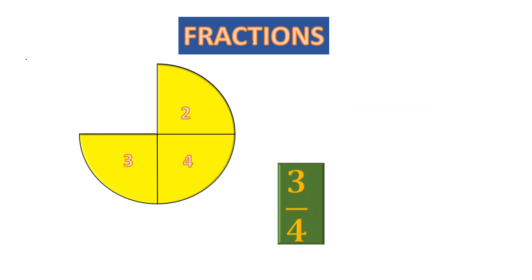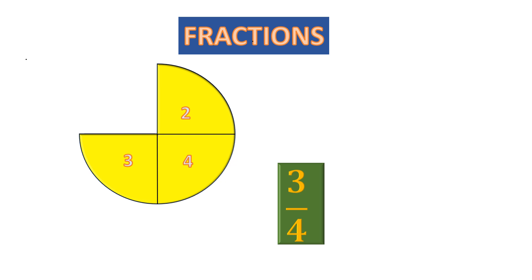Now what fraction of the circle is left in the figure? How many parts are left? One, two, three — the second part, the third part, and the fourth part. So we represent this as three by four, or three out of four, three over four. Three parts are left and there were four parts in total.